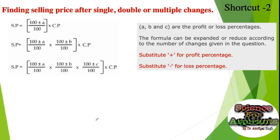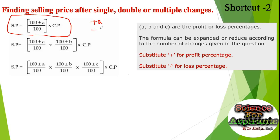Now we can also calculate the selling price of any product directly. If a product is sold at 10% profit or 10% loss, and the cost price is given, we can directly calculate the selling price using the formula: Selling Price = (100 plus or minus a) over 100, multiplied by Cost Price. Here, plus a means any percent profit, and minus a means any percent loss.